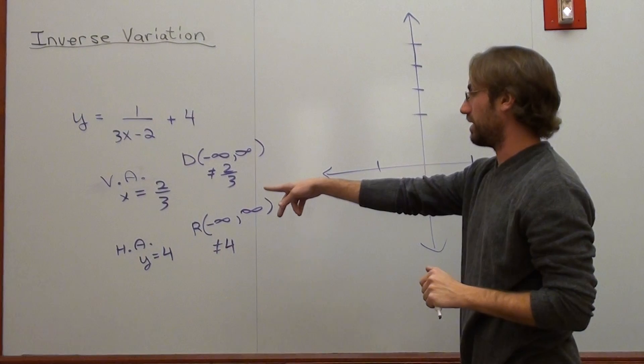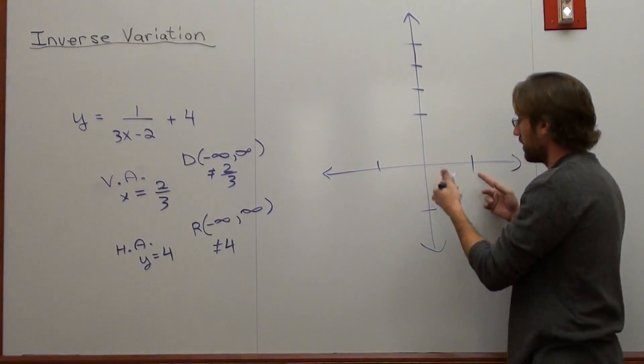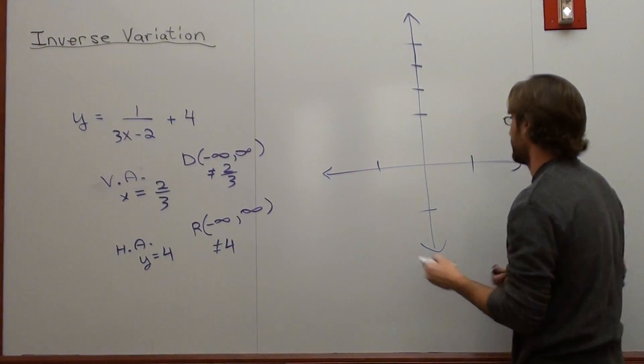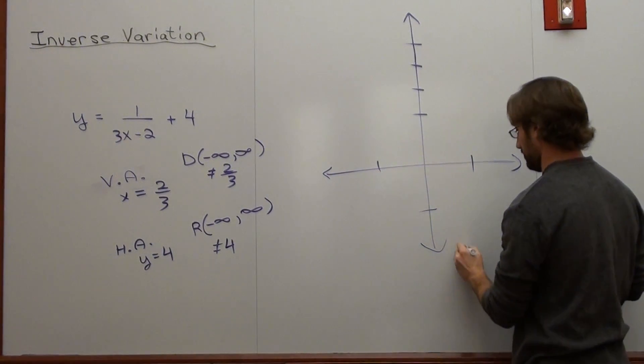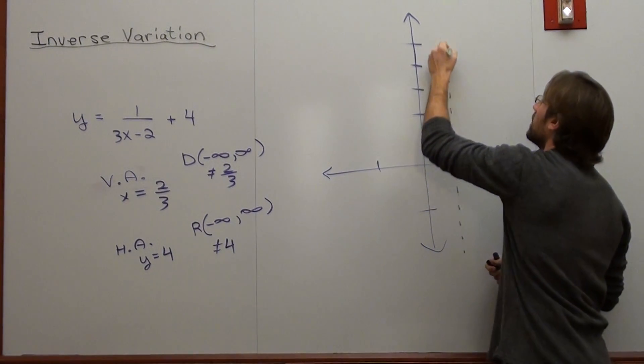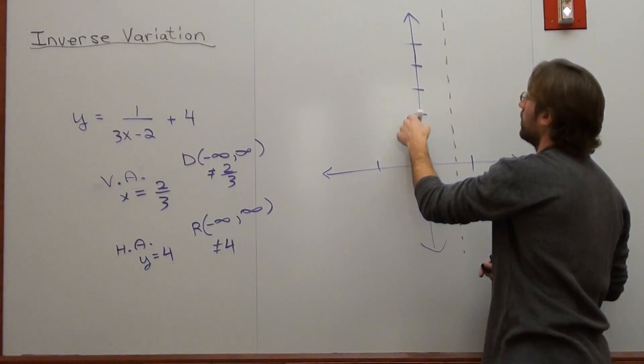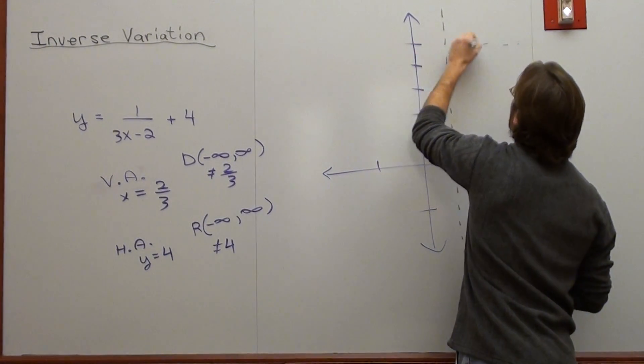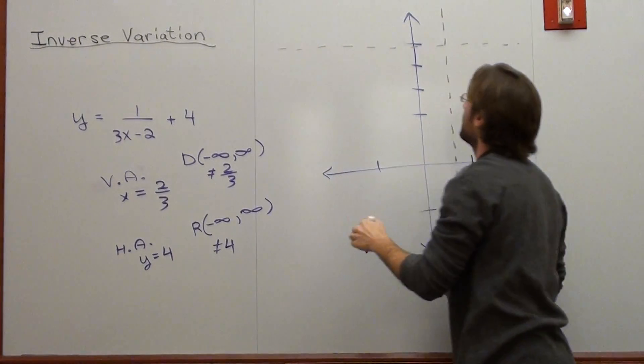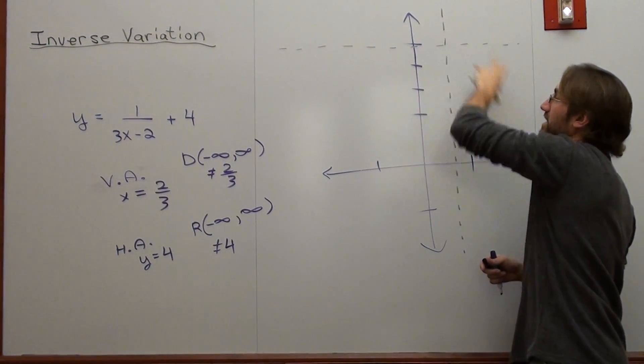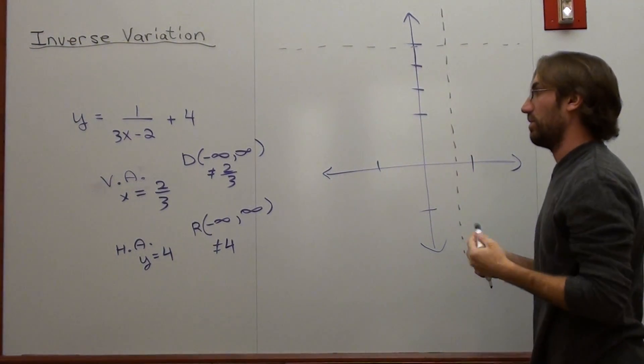And the vertical asymptote is at 2/3. So that's somewhere here. And my horizontal asymptote is at 4. 1, 2, 3, 4. So your graphs can never move past any of these particular lines. Now when I graph them,